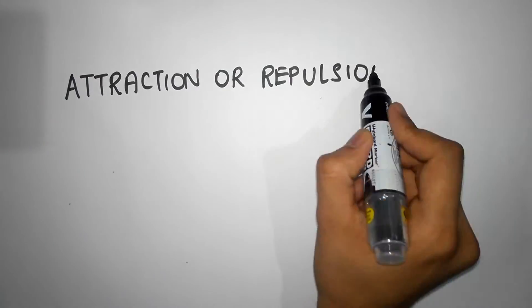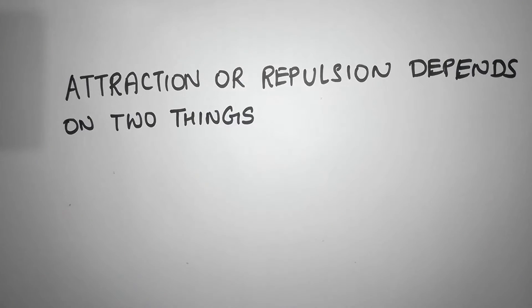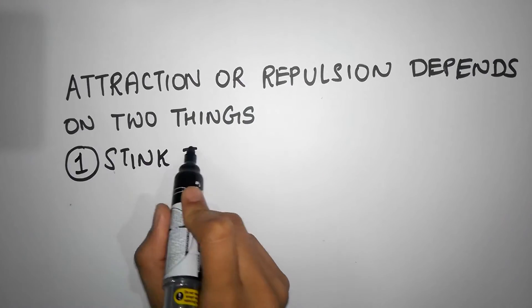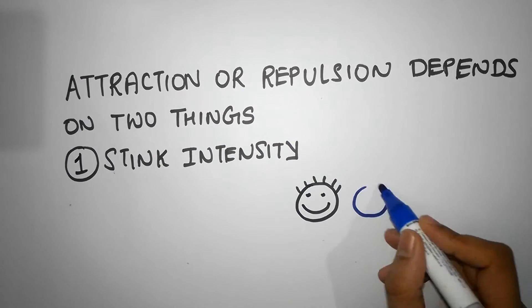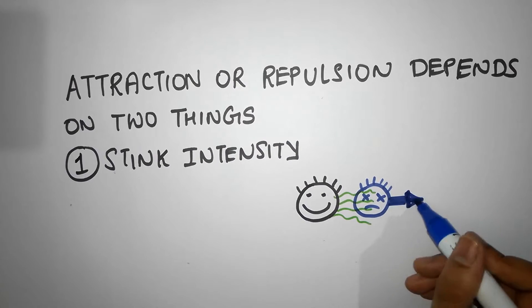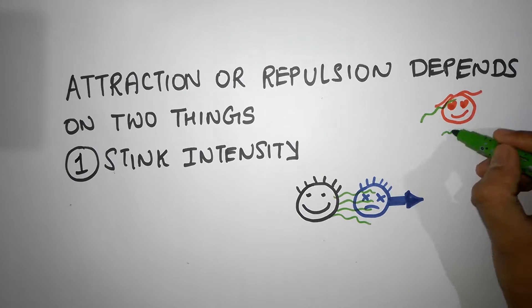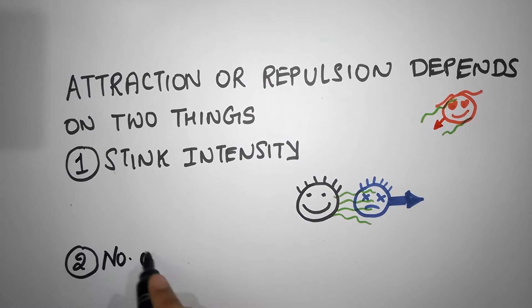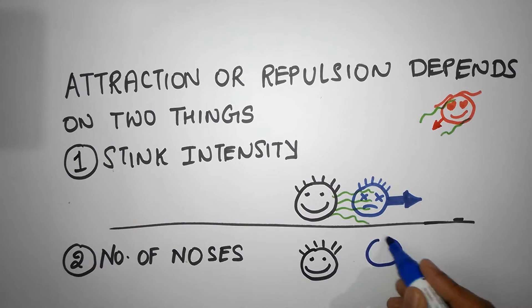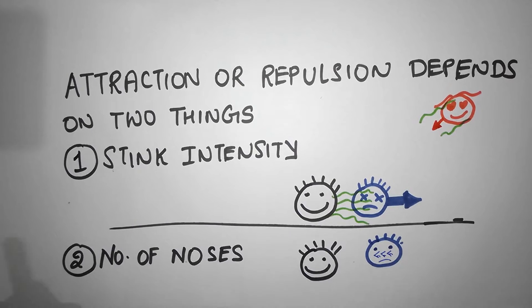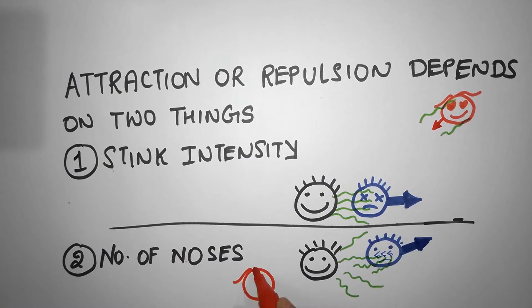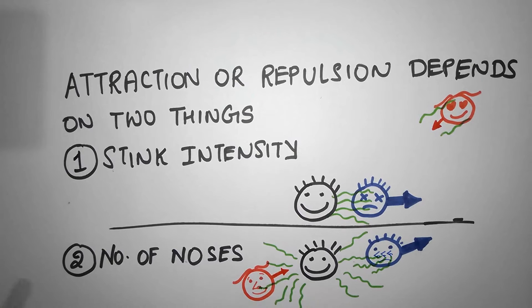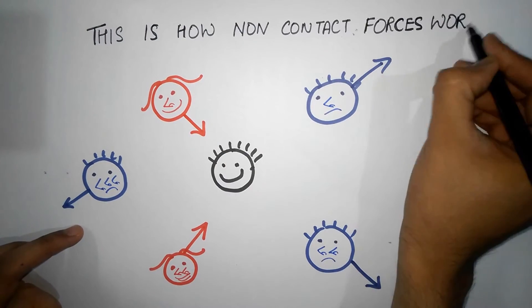Now notice that this attraction or repulsion depends on two things. One, how strong the stink in the room is. Closer they are to me, stronger is the effect. Farther away, the effect becomes weaker. And the second one is the number of noses. People who have more than one nose, for example if they have three noses, will be affected thrice as strongly as people with just one nose, right? You see what I did there? I just explained how non-contact forces work.